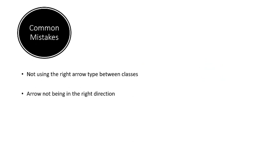However, make sure you don't follow these mistakes. One is not using right arrow types between classes—you want to show inheritance but the arrow that you're using is for composition. Another thing is make sure your arrow is pointing in the right direction. These are some of the common mistakes that students do and they lose points.